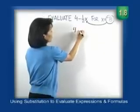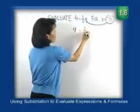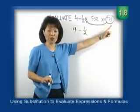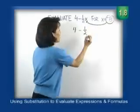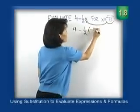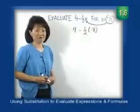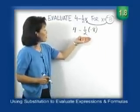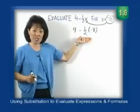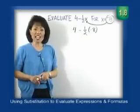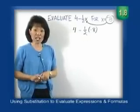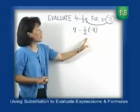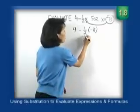Let's write that down: 4 minus 1/2, and in place of x we substitute the value negative 8. This takes us back to an order of operations problem. To simplify, we must do multiplication or division from left to right before we do addition or subtraction — so we're not going to subtract 4 minus 1/2 first.